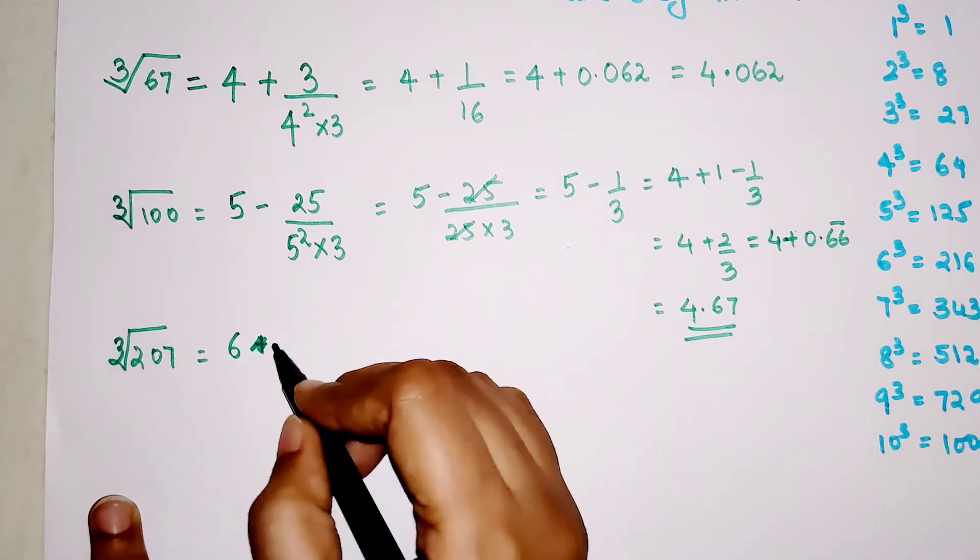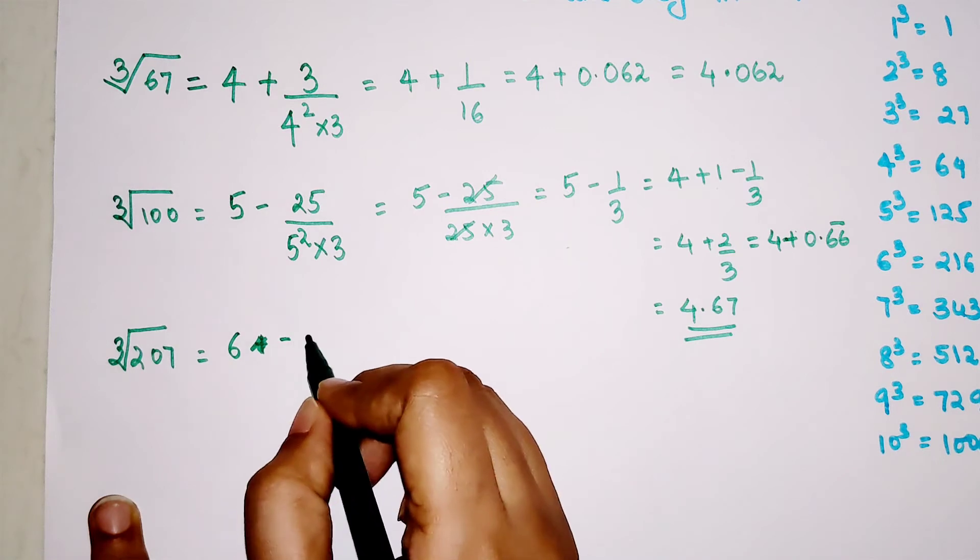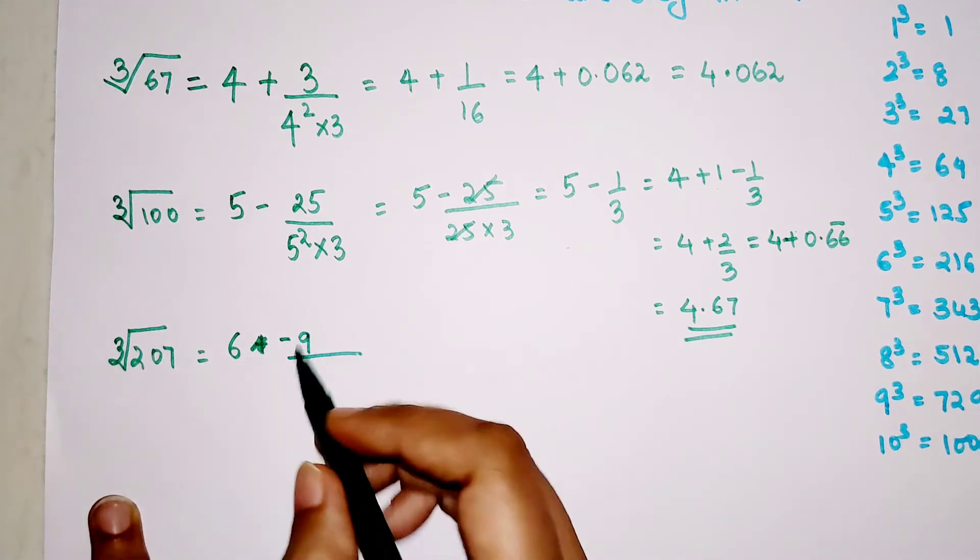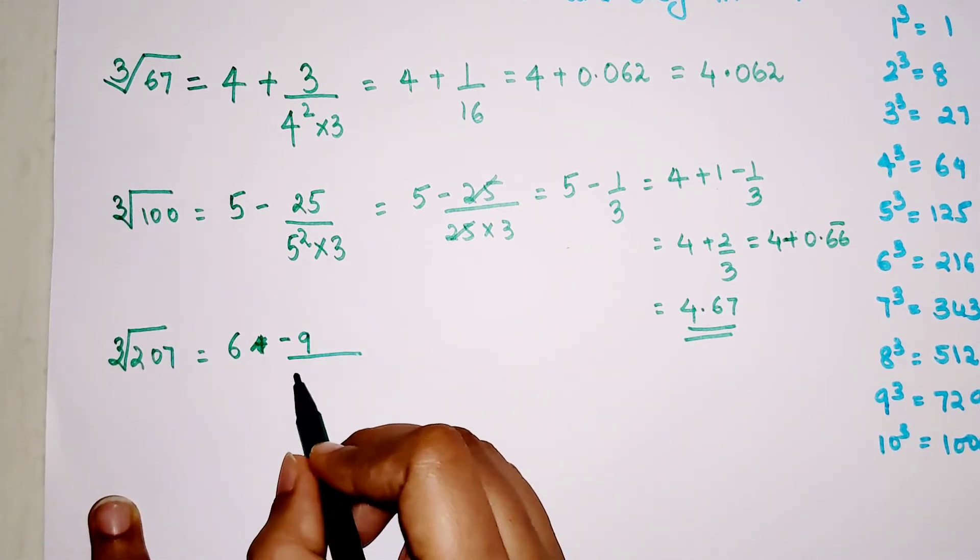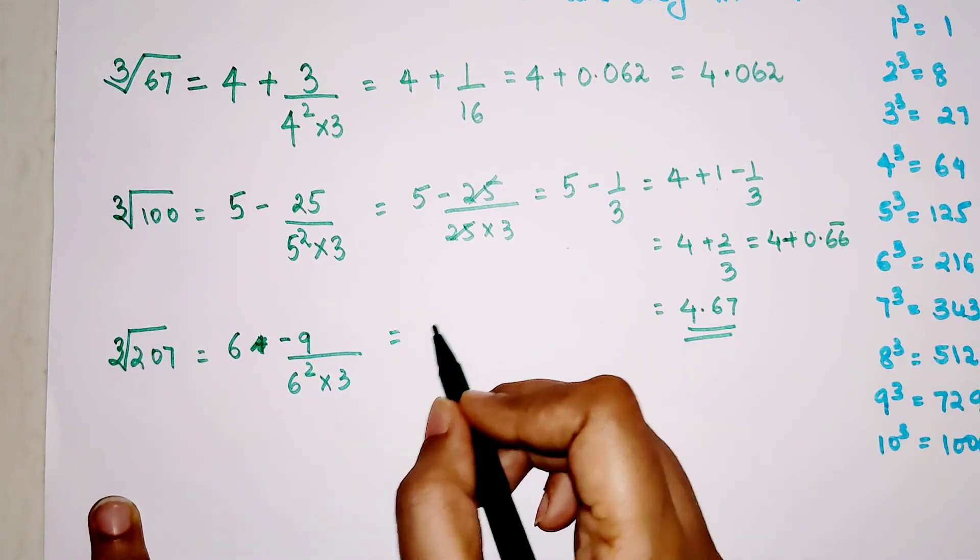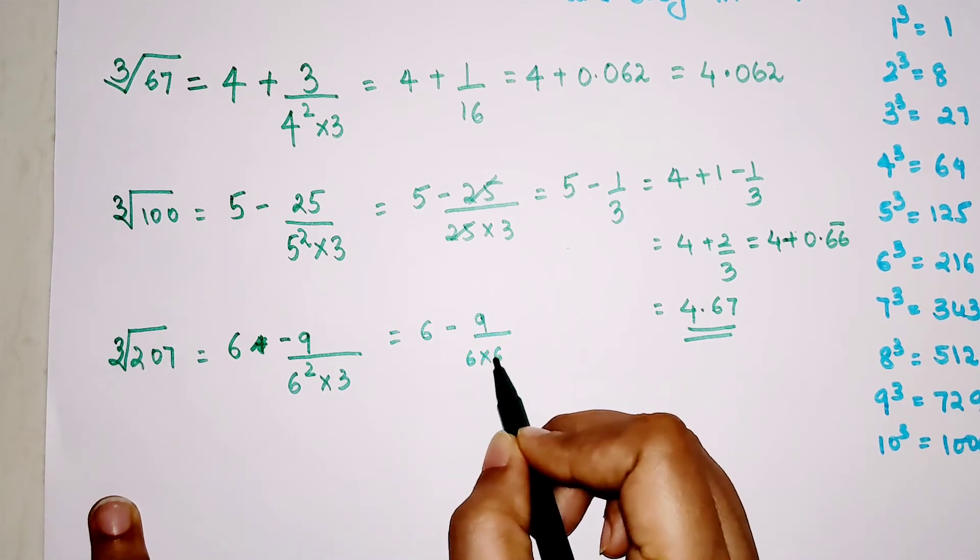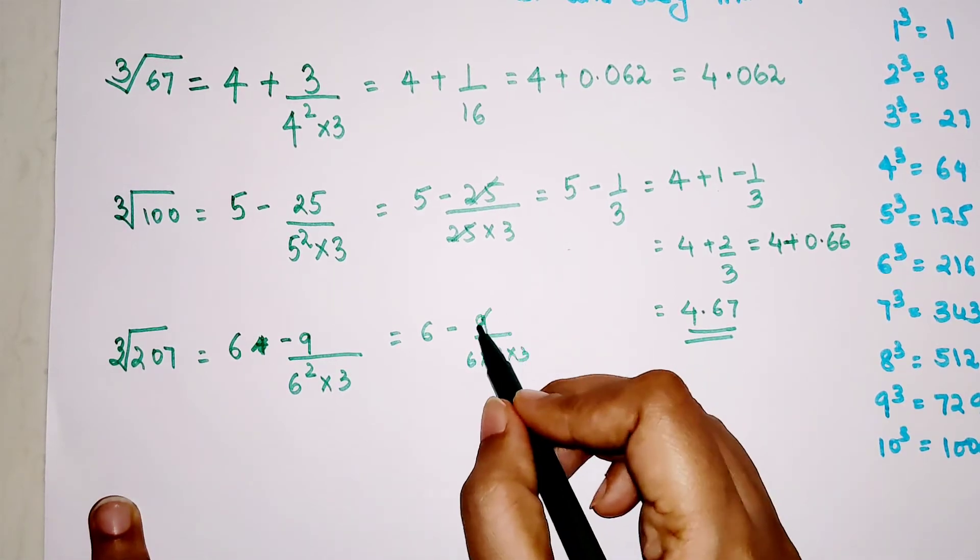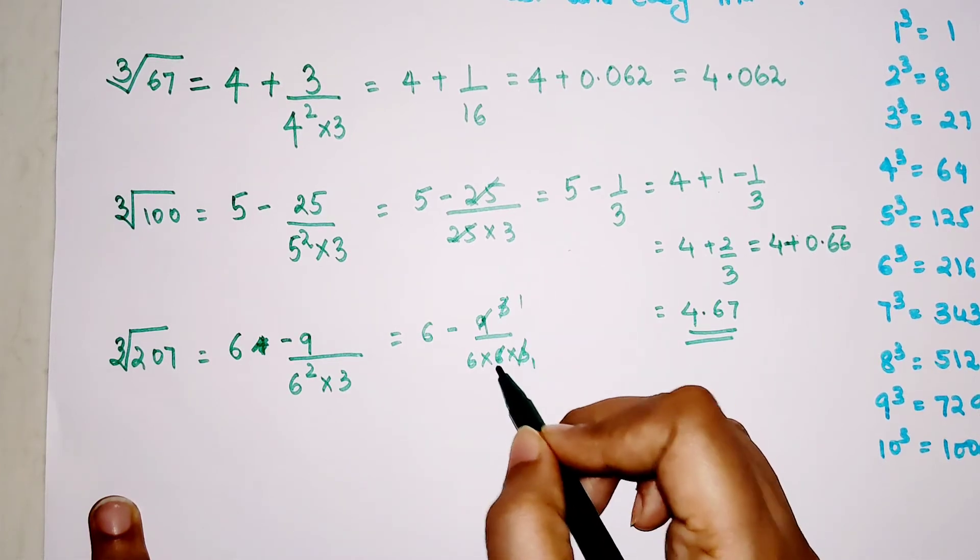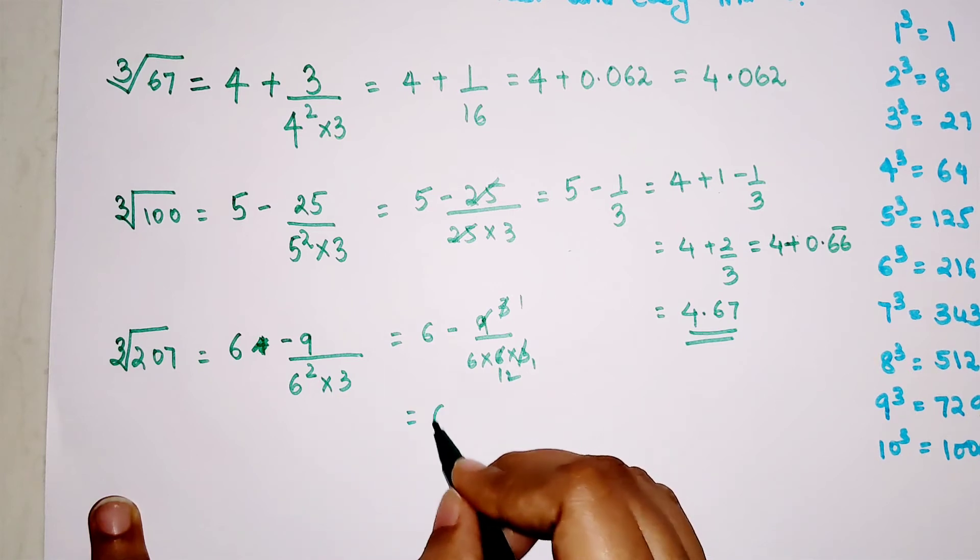Here again we have 6 squared into 3, so this becomes 6 minus 9 upon 6 times 6 times 3. This is 108, so here your answer now changes to 6 minus 1 upon 12.